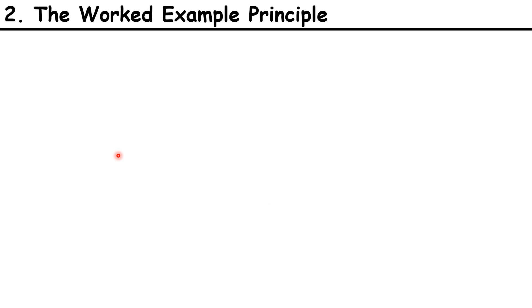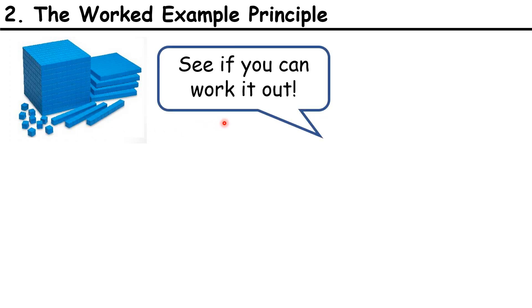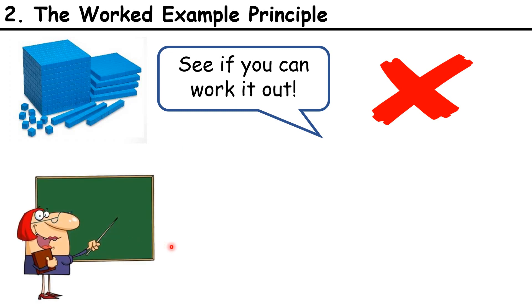To start your lesson on, for example, multiplying a two-digit number by a single-digit number, giving the children a pile of base 10 blocks and asking them to work the method out for themselves isn't going to work. That's why our second principle is the Worked Example Principle. Instead of expecting children to be able to discover things for themselves, the first part of your lesson needs to be teacher-led. You need to work the children through examples.